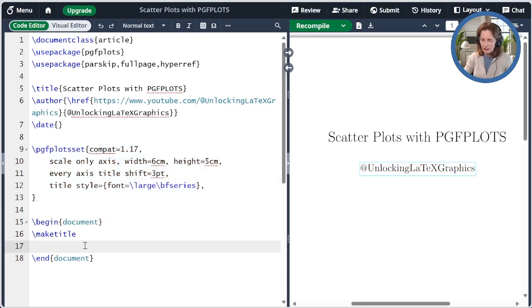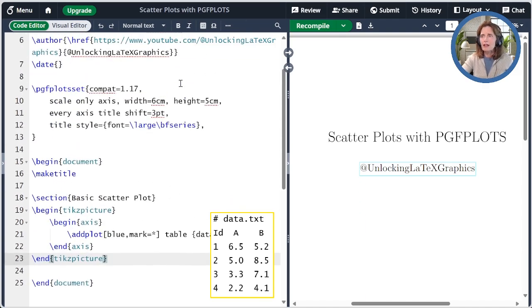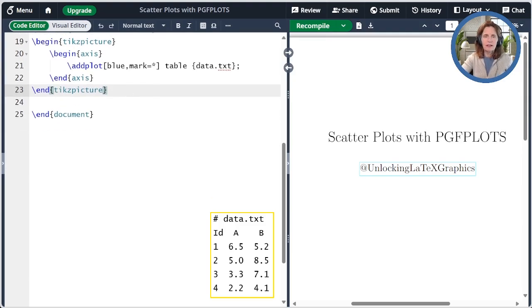So let me paste a basic plot here. The TikZ picture environment is the drawing canvas. The axis environment creates axes for the plots. And then the addplot command reads information from the file data.txt, where the columns contain data to be used for our points. By default, the first column is used for the X values, and the second column is used for the Y values. Here, we're just specifying the color and that the mark is the default star. Let's see what happens when we compile it.